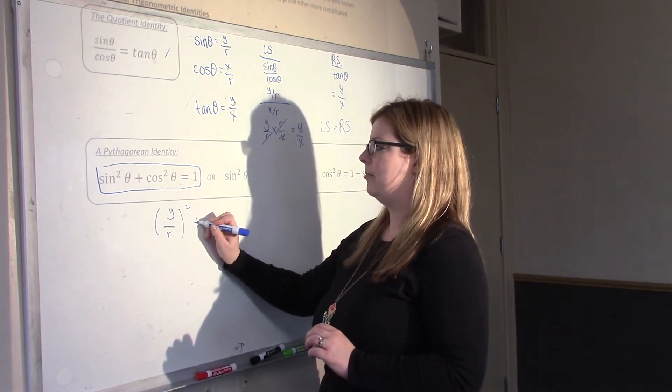So before we actually go through and prove some of these, I'm going to give you some tips and tricks. The first one is to simplify the more complicated side first. Sometimes there's one side that you're like, I don't really know how I can change that — so change the other side until it looks like the original side.